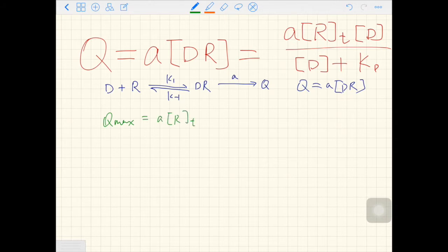Why? Because you can only achieve the maximal response when all the receptors are in the active form, which is DR. We have the equation of states, RT has two parts.